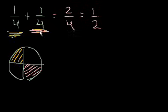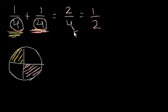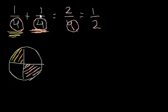If we look at it mathematically, what happened here? The denominators — the bottom numbers in the fraction — stayed the same, because that's just the total number of pieces. We added the numerators, which makes sense: I had 1 out of 4 pieces of pie, then I ate another 1 out of 4 pieces of pie, so I ate 2 out of 4 pieces of pie, which is 1/2.